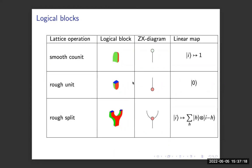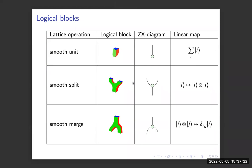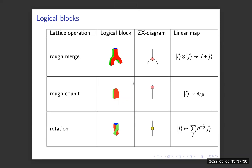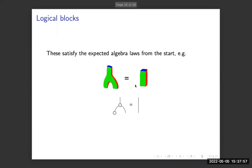The smooth operations form a Frobenius algebra and the rough operations form another Frobenius algebra, with interaction between them given by the Hopf law and the bialgebra. A rotation corresponds to applying Hadamard or Fourier transforms individually to your qudits, which actually changes which orientation your rough and smooth boundaries are. You can see from the topological diagrams that the algebra laws I gave at the start are implicitly satisfied by a kind of isotopy — for example, the unit rule smoothly deforms to the expected result.